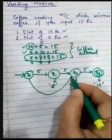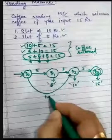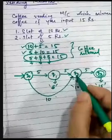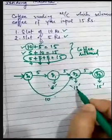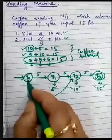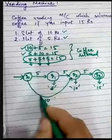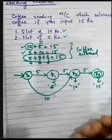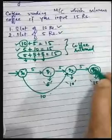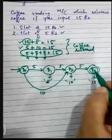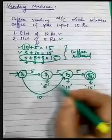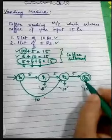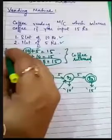If I input 10 rupees first and then 5 rupees, I can have one transition directly to q2 with the 10 rupees, because q2 is the state representing receipt of 10 rupees. So I will directly jump from the initial state to q2 with the 10 rupees input, and then with 5 rupees I can reach the final state, meaning I have completed 15 rupees input and can get a coffee release.